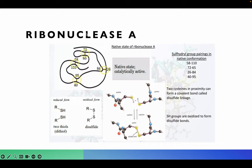Anfinsen used the enzyme ribonuclease A to prove some aspects of protein folding. Ribonuclease A is an enzyme whose structure contains disulfide bonds, shown in the yellow circles. These disulfide bonds are formed from thiol groups — the reduced form is two thiol groups, and when oxidized, they form a disulfide linkage.